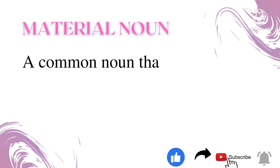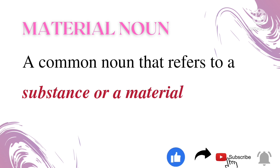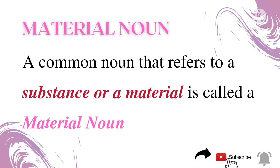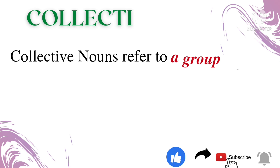Next, let's see the material noun. A common noun that refers to a substance or a material is called a material noun. Examples of material nouns: clay, steel, gold, wood, cement, milk, cotton, etc.